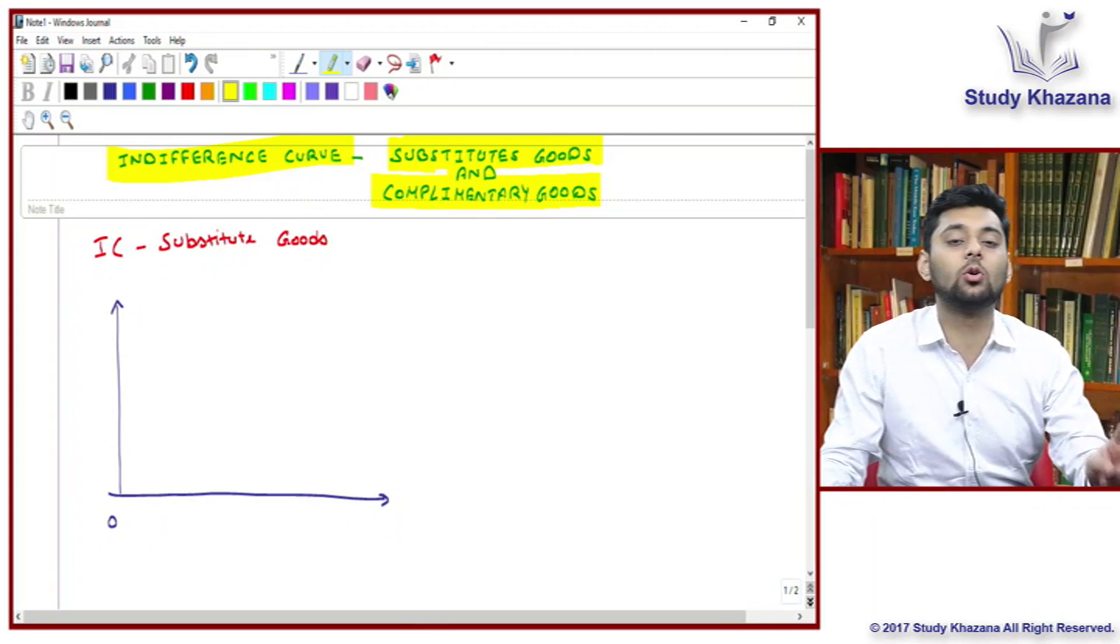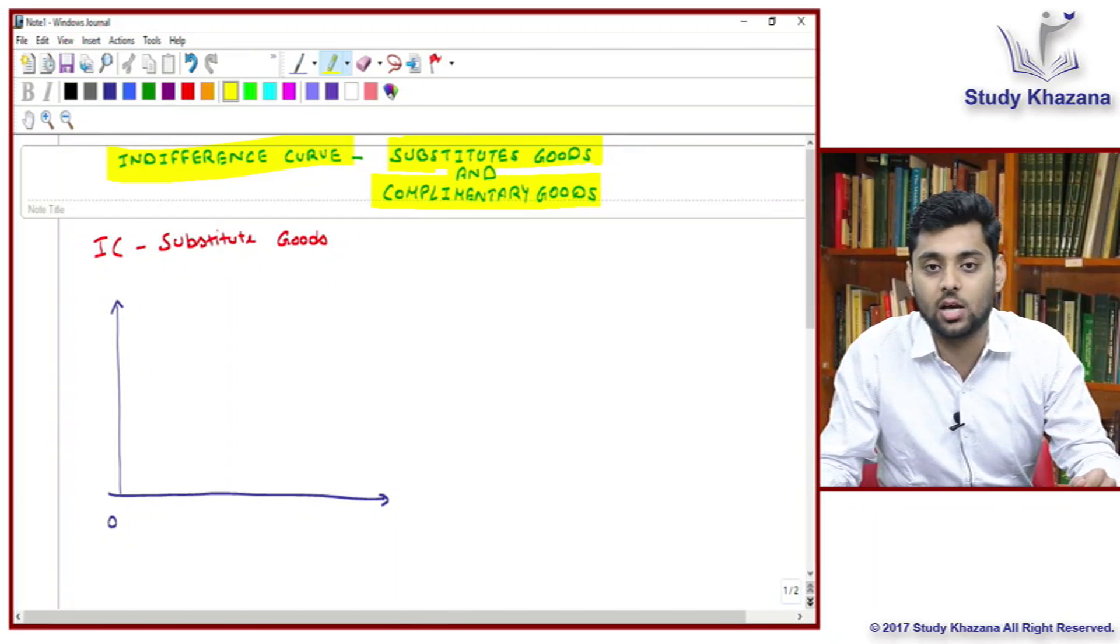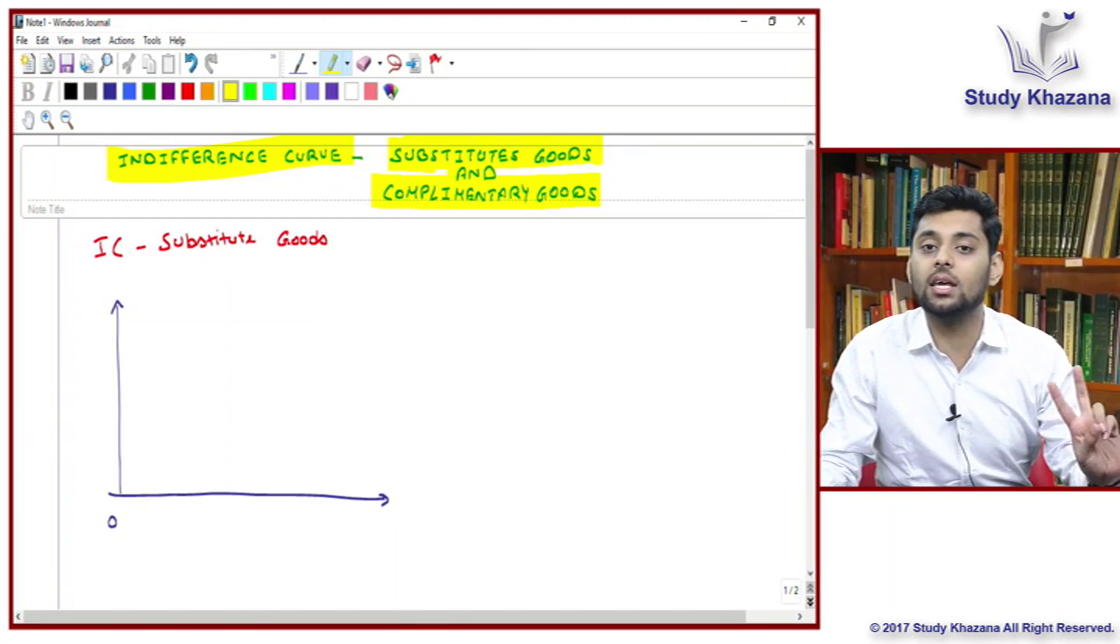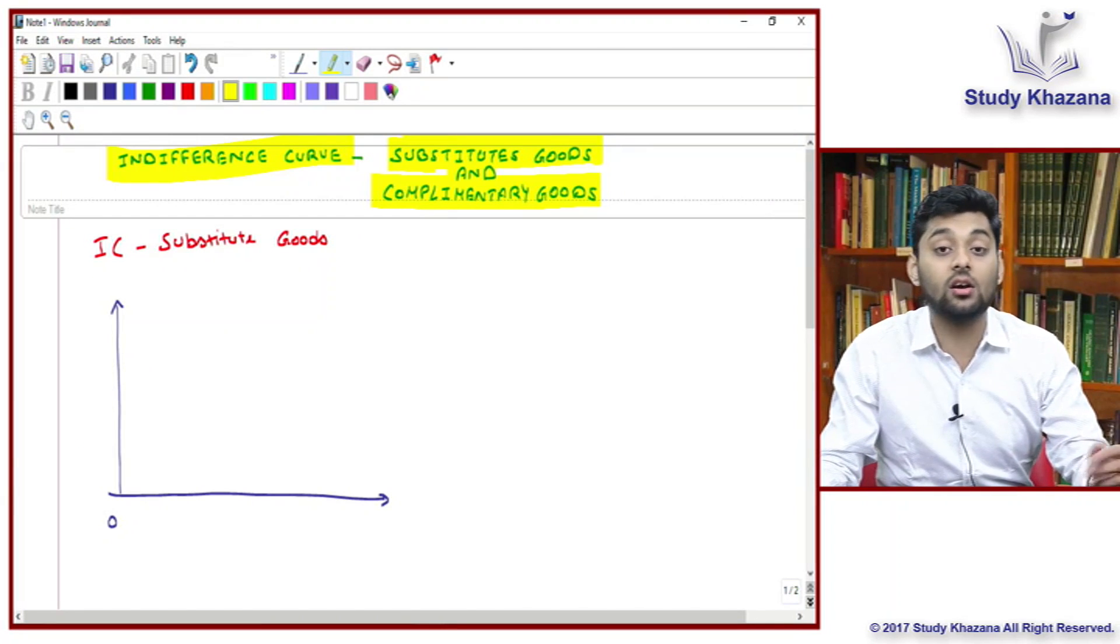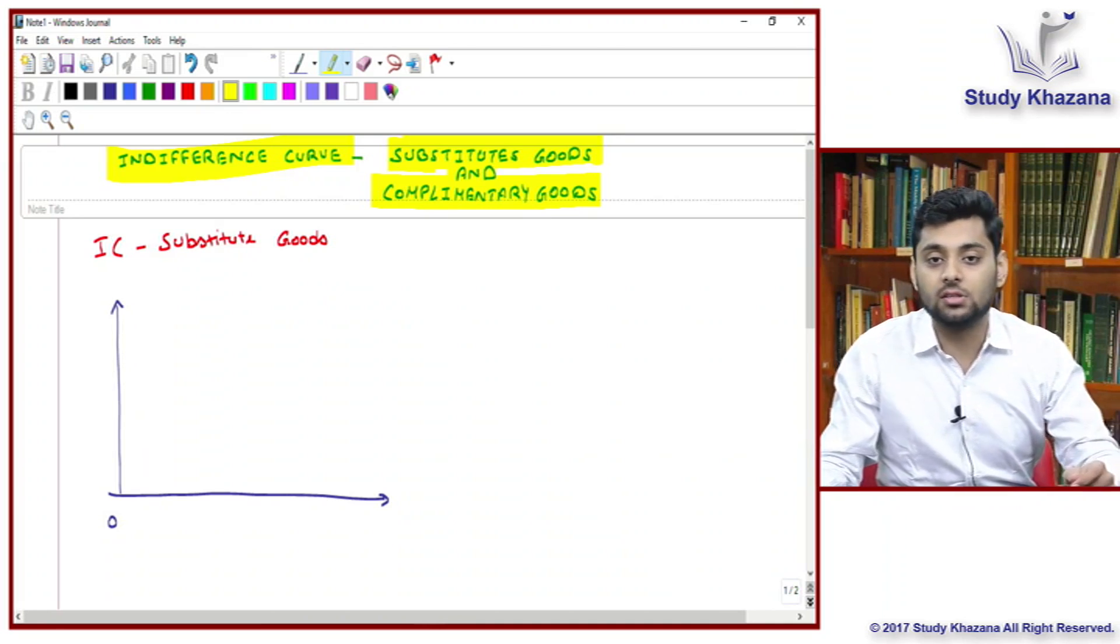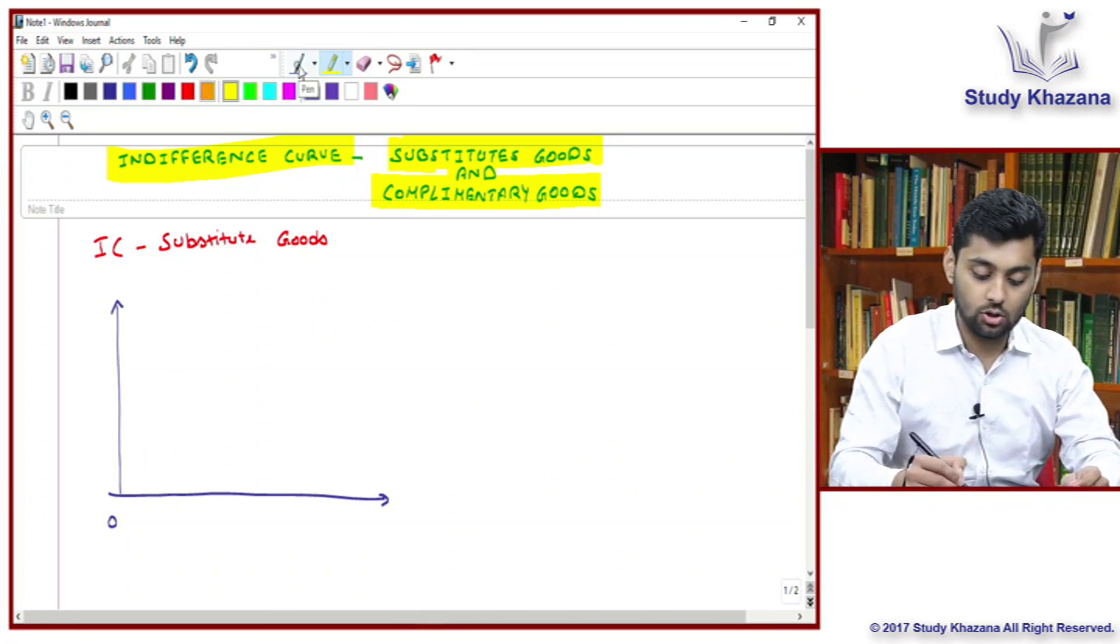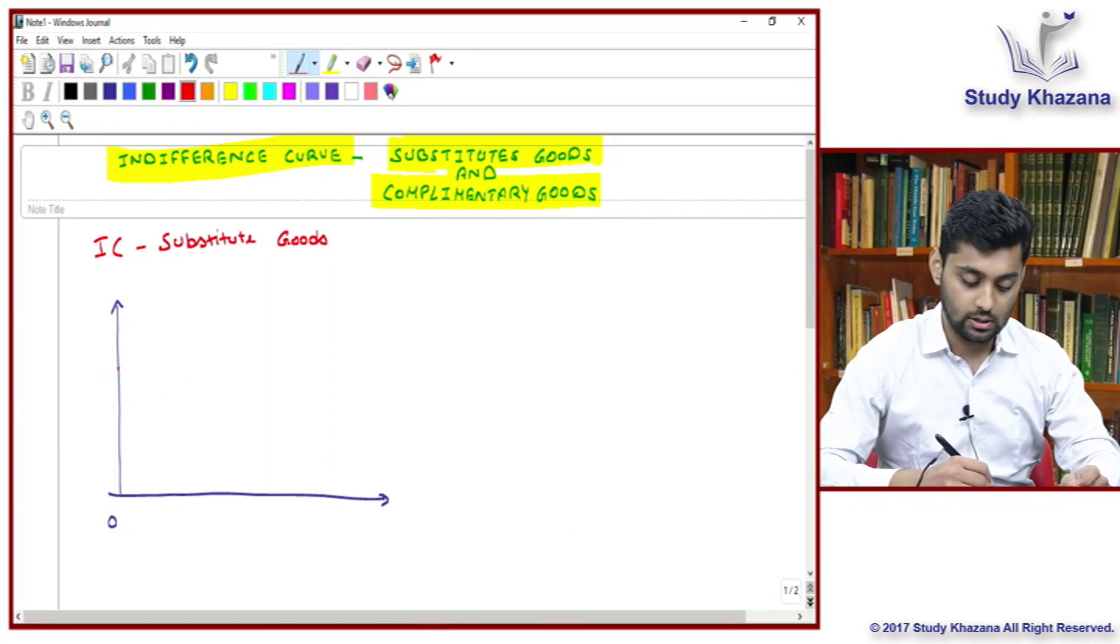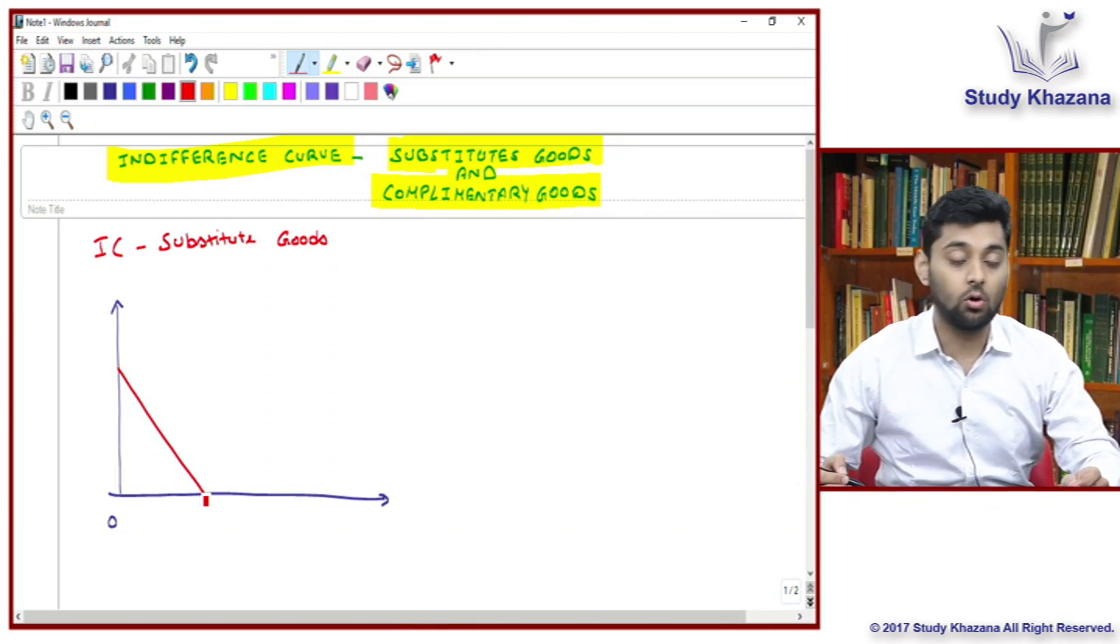Substitute goods are those two goods which give you the same level of satisfaction. You are confused because both give you the same satisfaction. In the case of these goods, your indifference curve would be a straight line downward sloping curve.